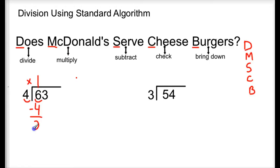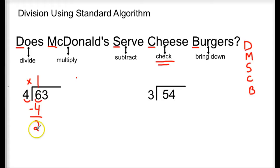6 minus 4 is 2. My next step is to check. This is a very important part that a lot of people skip. You want to make sure that the number you subtracted, your 2, is less than the divisor. So 2 is less than 4, so I've checked. Now I can continue on with bringing down, and what I'm going to bring down is the 3.